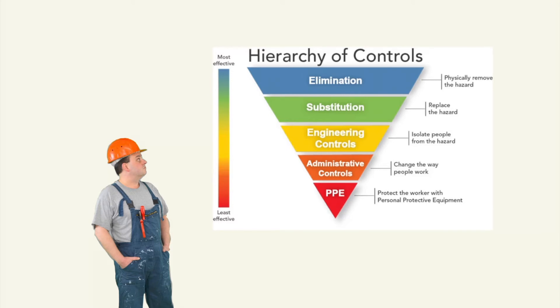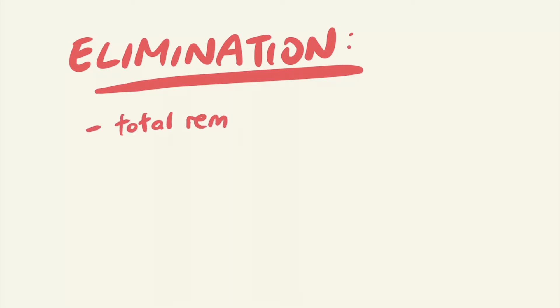If Bob's workplace was to assess the risk of the various hazardous materials that Bob works with using the hierarchy of controls, the best type of control that they would choose would be elimination, as it offers the highest level of protection. In elimination, this means totally removing the hazard from the workplace. This is obviously the most effective way of reducing risk.